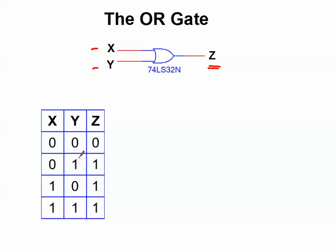Because in this case, Y is true, so therefore Z is true, because X or Y evaluates to true. In this case, X is true, and so Z is true. And of course, in the last case, both X and Y are true, so Z is true.